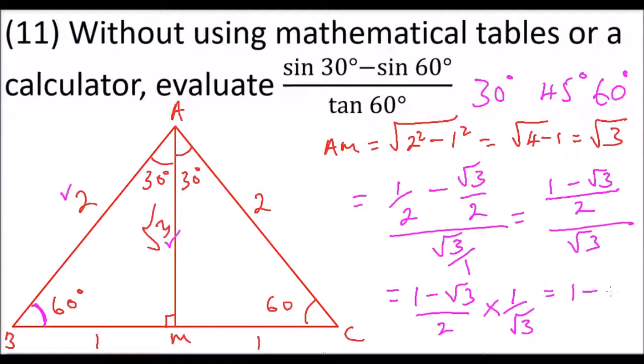1 minus root 3 divided by 2 multiplied by root 3 is 2 root 3. So that is how you work it out and evaluate this without using a calculator or mathematical table.